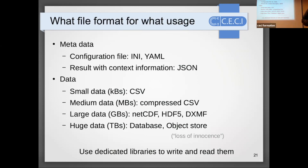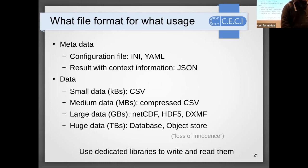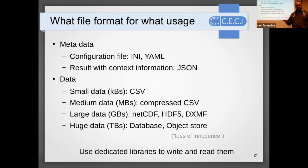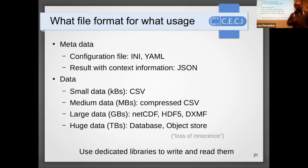A question from the chat: what defines a file format? The file format defines how information is organized in the file. First it defines whether the file is text or binary. For text files, the format dictates syntax - like the syntax of a programming language. For binary files, the format dictates the meaning of every byte: perhaps the first byte is a file format identifier, the second byte is the file length, and so on - much like a protocol.